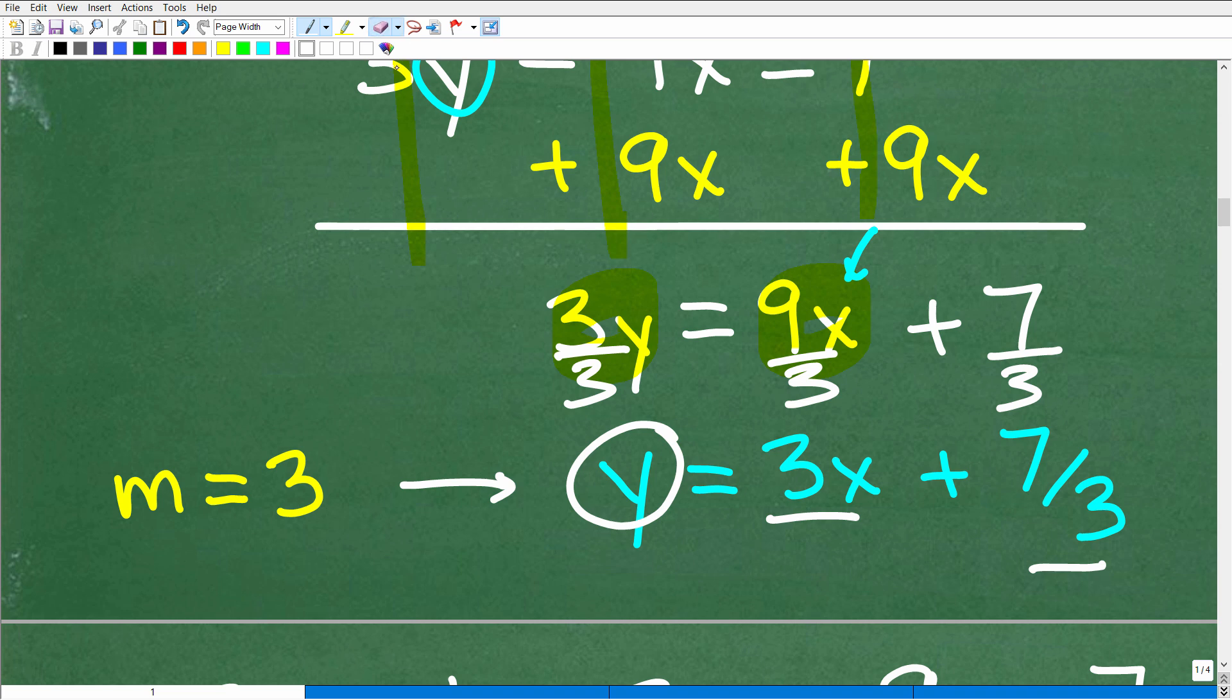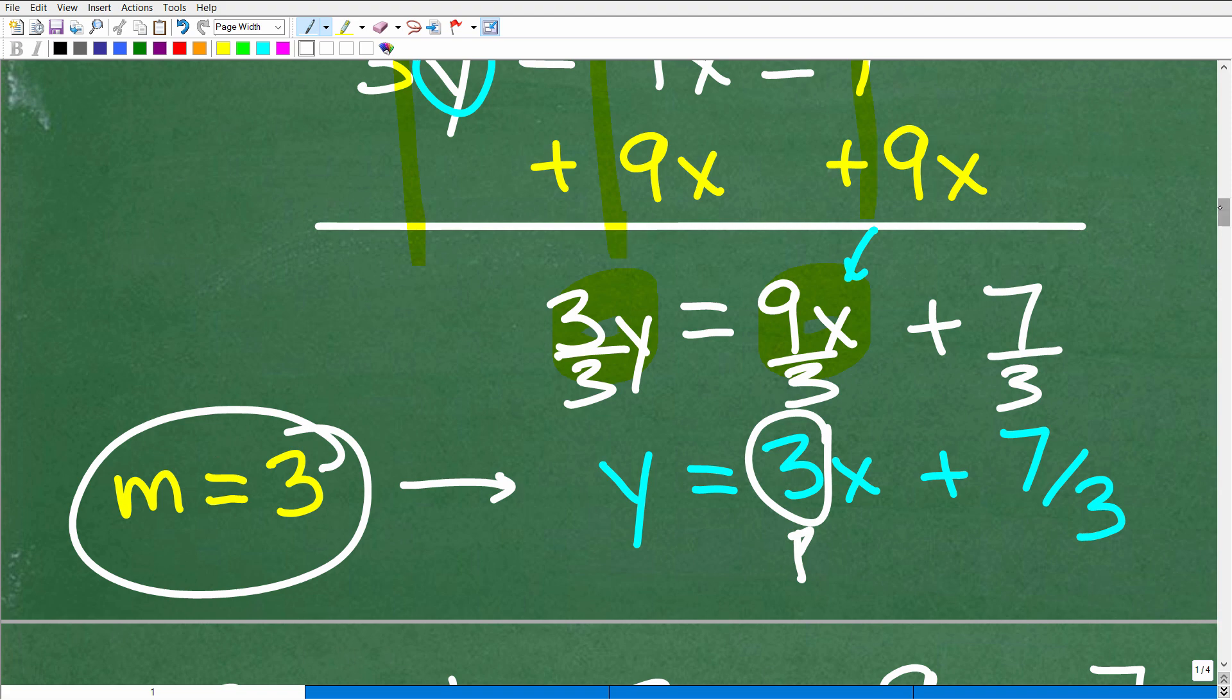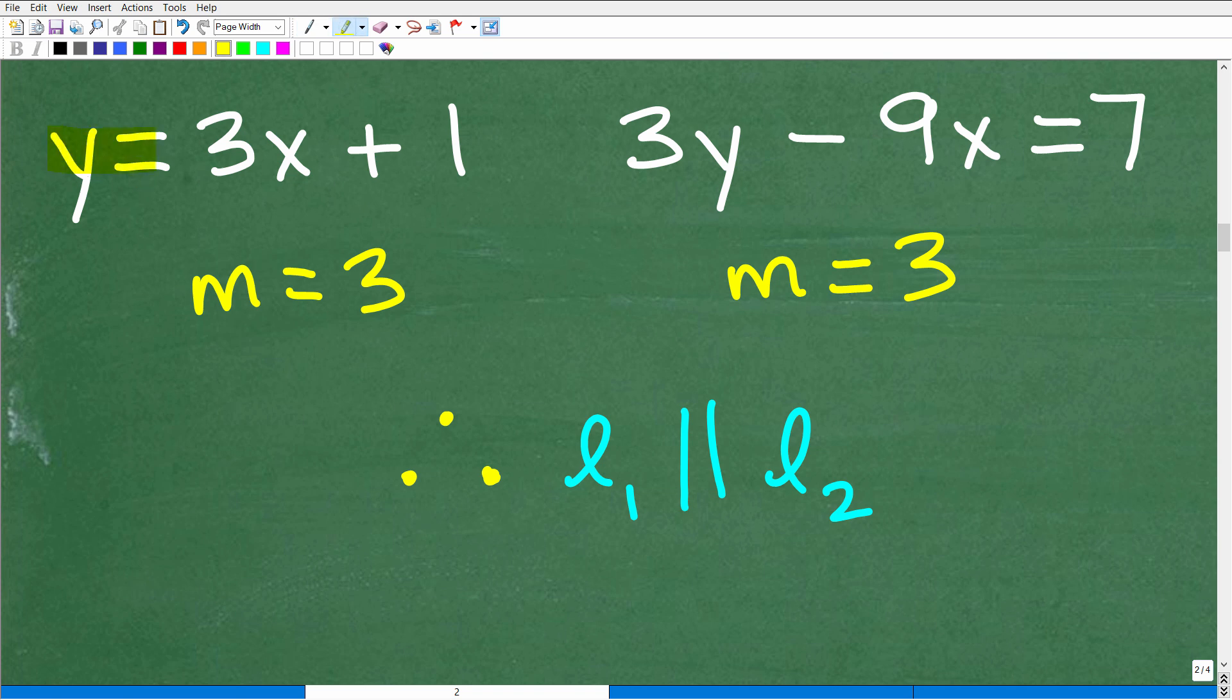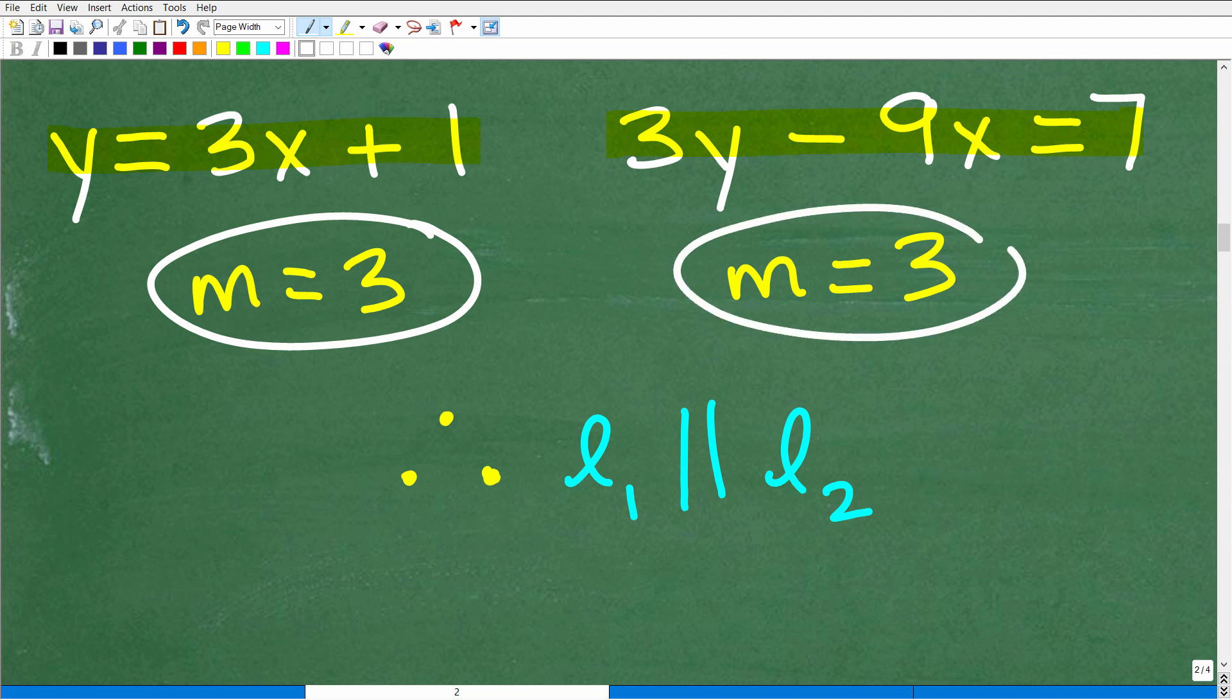We have 3y is equal to 9x plus 7, but we want y is equal to, not 3y is equal to. So to fix this up, all I have to do is divide everything by 3. So 3 divided by 3 is 1y or y. 9 divided by 3, of course, is 3 or 3x, and then here we have 7 thirds. So we are done, and what we just did here is write that linear equation into y equals mx plus b form, slope-intercept form. So this number here, 3, is the slope of this line, so its slope is 3.